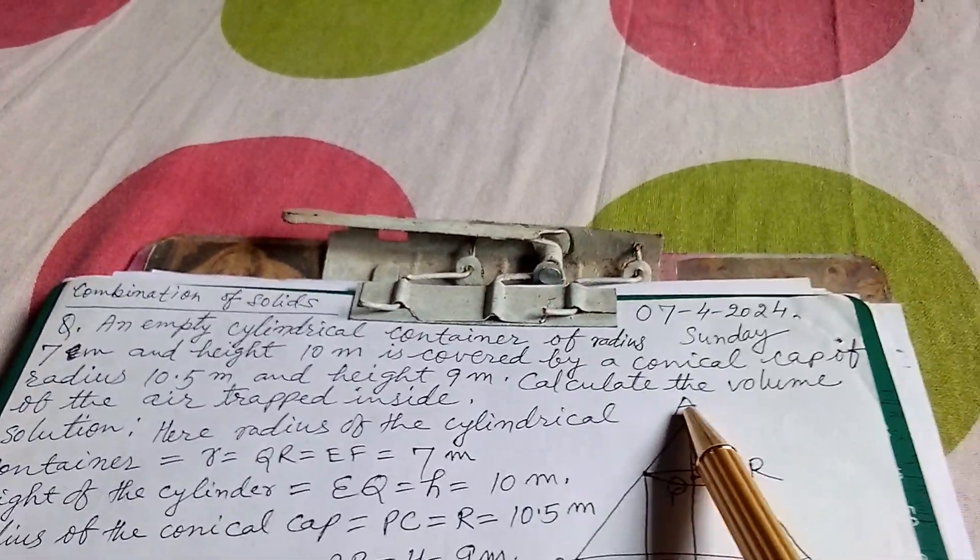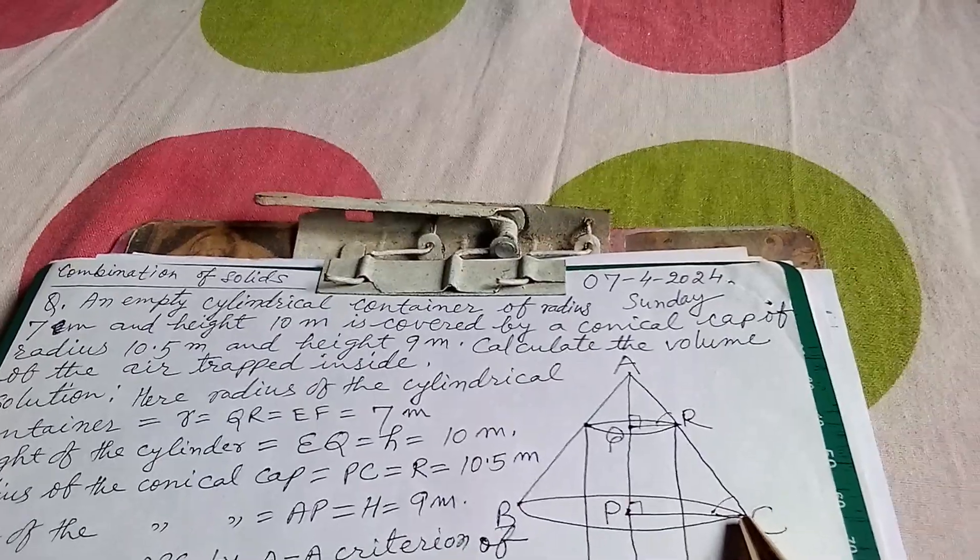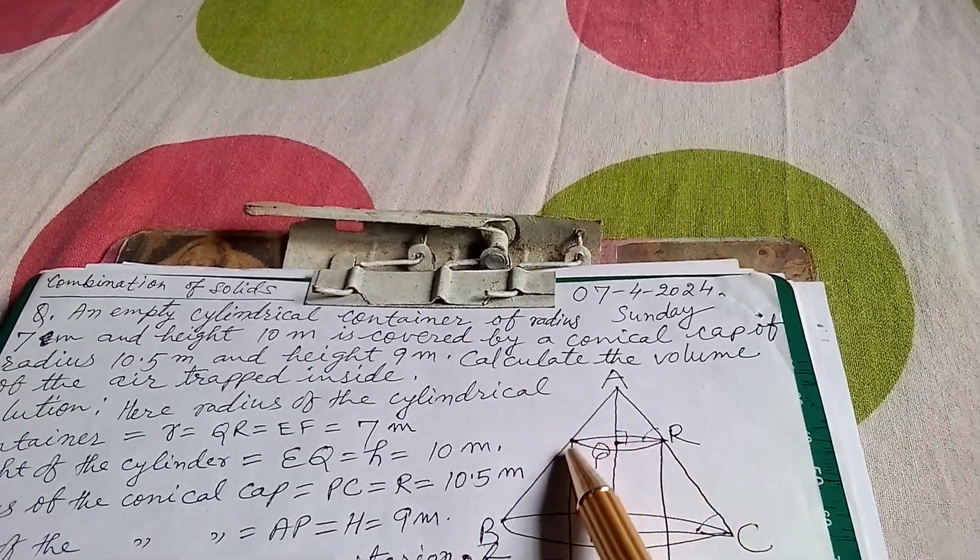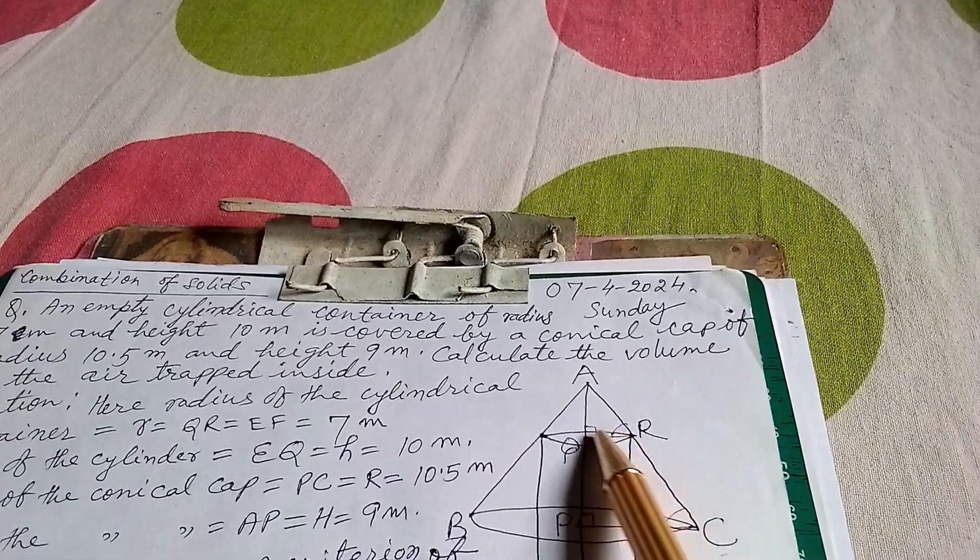Here this is ABC which is the conical cap and this is a cylindrical empty cylinder.